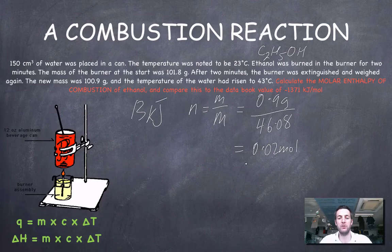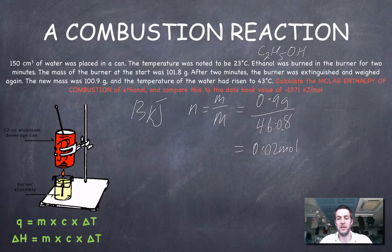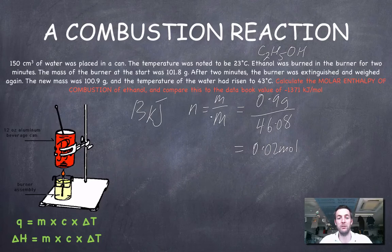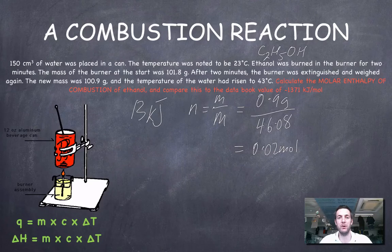So I now know the number of moles of ethanol. I know the heat change for this number of moles of ethanol. If I told you that you had two moles of ethanol and asked you how many kilojoules you'd release for every mole, you'd divide that by two. You'd take this heat change and divide it by the number of moles.